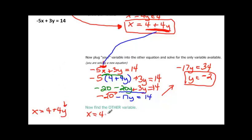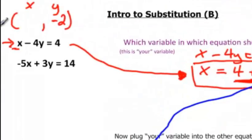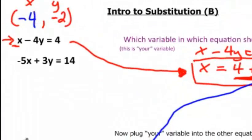So x is equal to 4 plus 4 times that negative 2. And so we're going to have x is equal to 4 minus 8, negative 2 times 4. And 4 minus 8 would be negative 4. So there's our x. And back up here at our ordered pair, we have negative 4, negative 2.